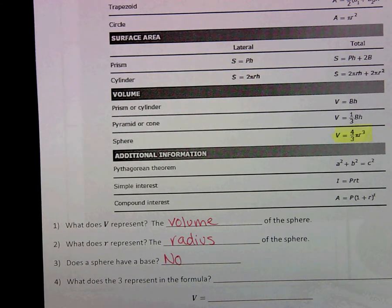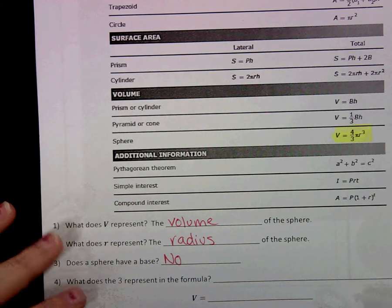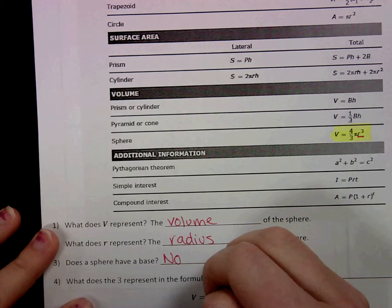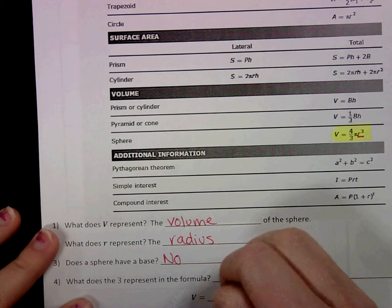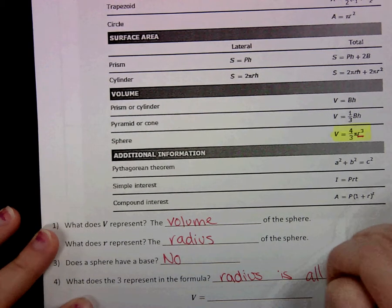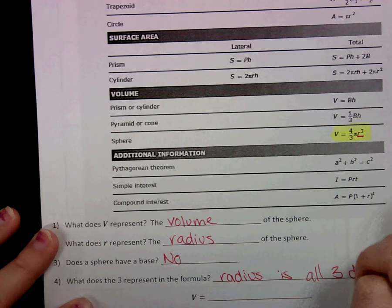Well, since a sphere doesn't have a base, all of our dimensions are based on the radius. So the radius is all three dimensions.